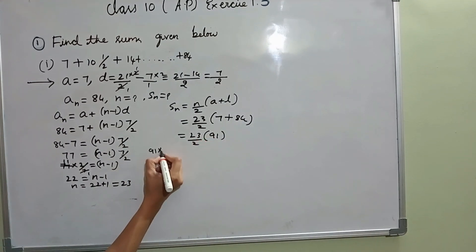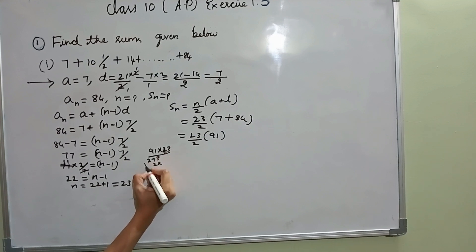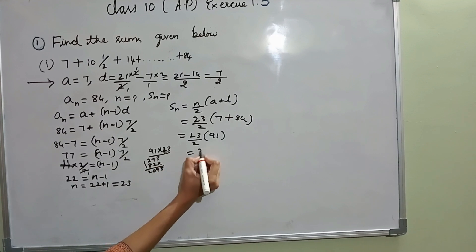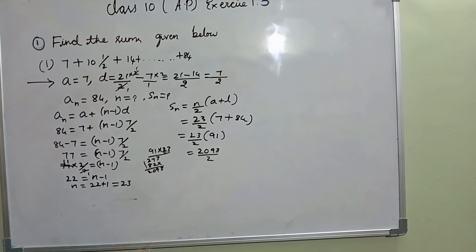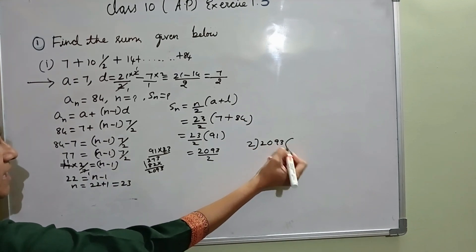We will find 91 into 23. Working through the multiplication: 91 into 23 gives 2093. 2093 divided by 2 — it is an improper fraction, so we convert it to a mixed fraction. I will divide 2093 by 2.